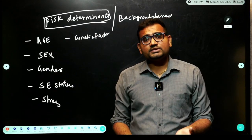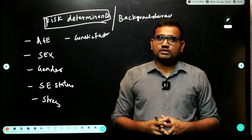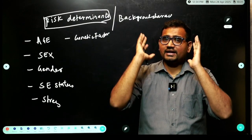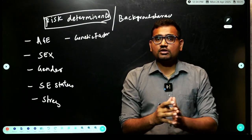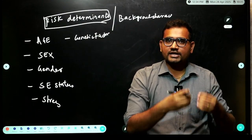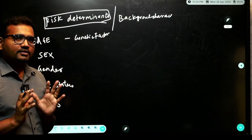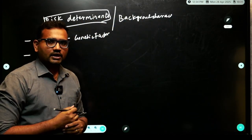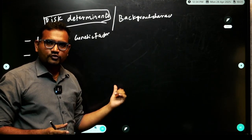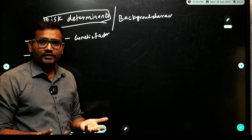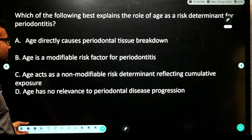Risk factors are those things which can be modified — smoking, diabetes. Risk indicators are if this is present, that can be present — past signs like bleeding on probing, attachment loss. When I cannot modify something, I call it non-modifiable. These factors come under risk determinants.